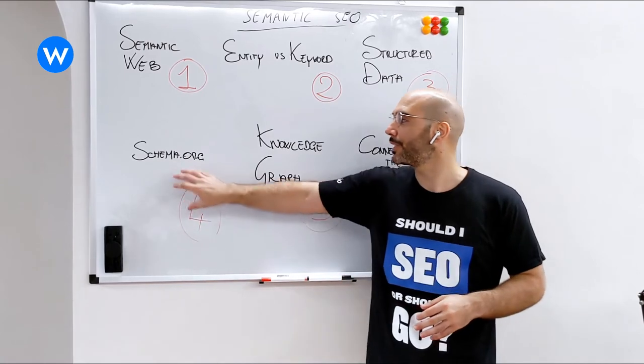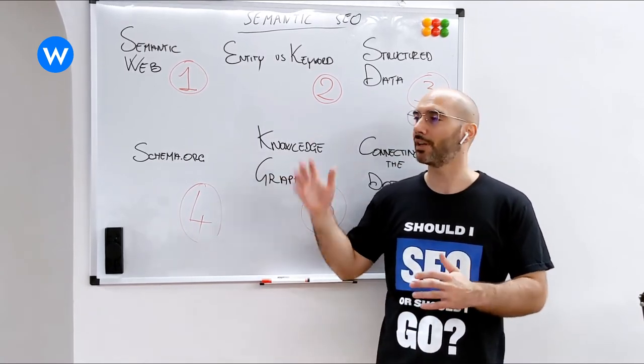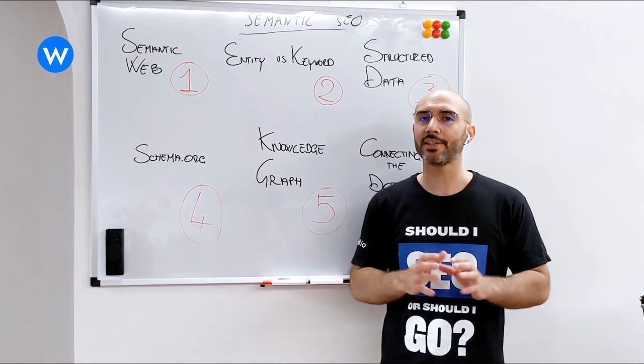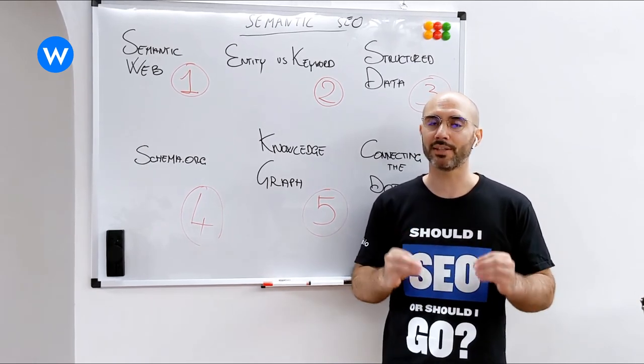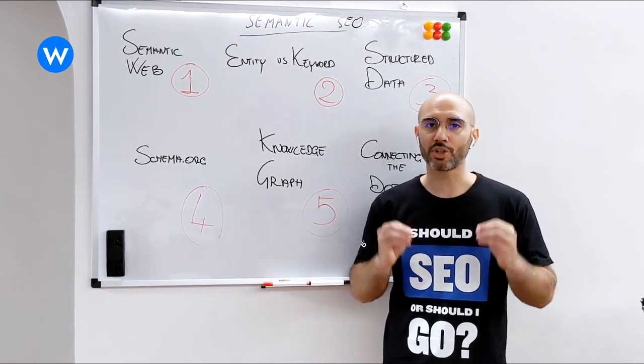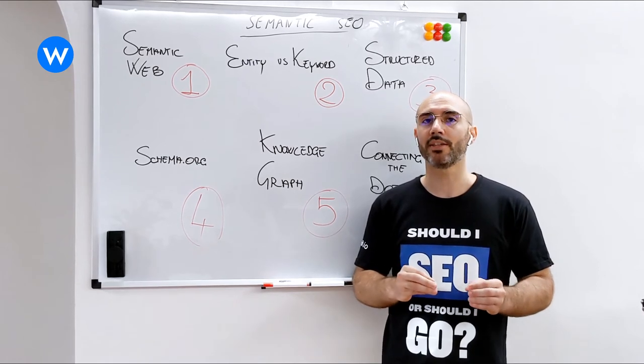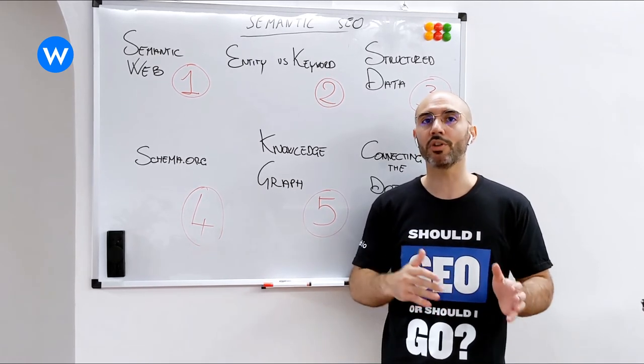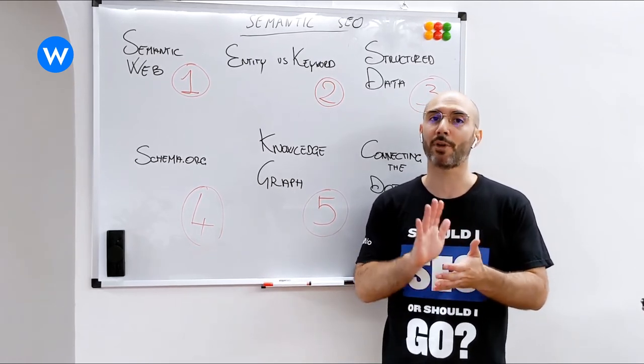That is called schema, which is a vocabulary which we are going to see in the next lecture. But for now, let's keep in mind that that's what an entity is. An entity is a machine-readable concept that search engines like Google can process and understand right away.